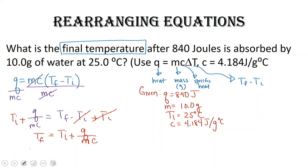So now all we have to do is just plug and chug to get our answer. T initial is 25 degrees Celsius, and then plus, I'm going to do a big parenthesis. I've got 840 joules divided by 10 grams divided by 4.184 joules per gram degrees Celsius.